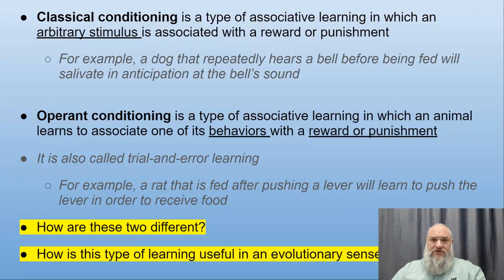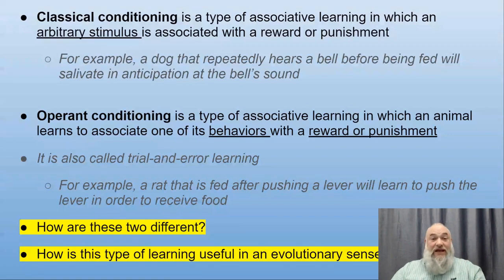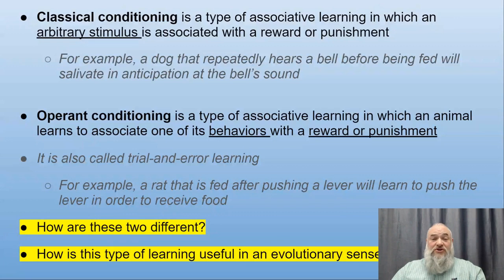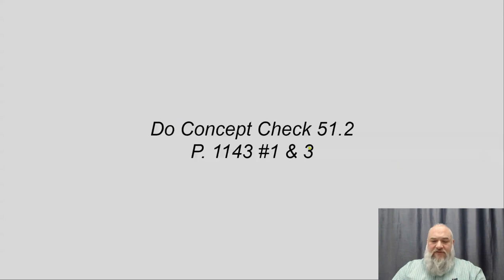Operant conditioning has a strong evolutionary connection — eat a bad butterfly and get sick, smell bad food and don't eat it. It helps avoid harmful things and pursue beneficial ones, like preferring sweet tastes for their high caloric value. Do concept check 51.2 on page 1143, numbers 1 and 3.